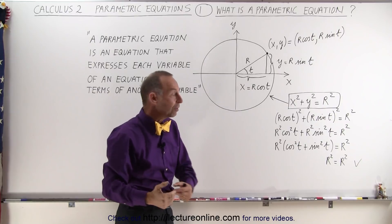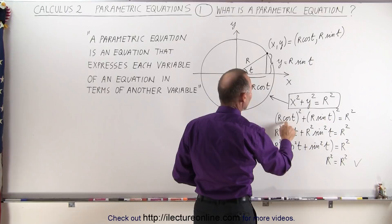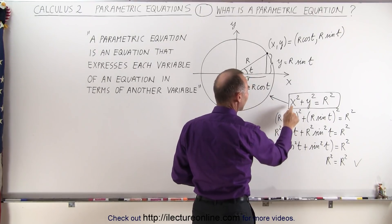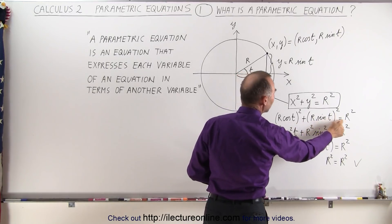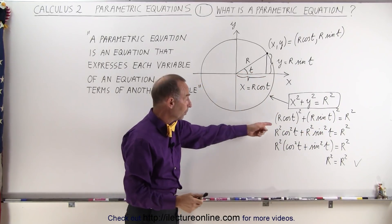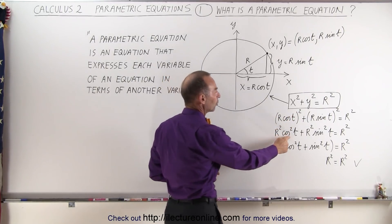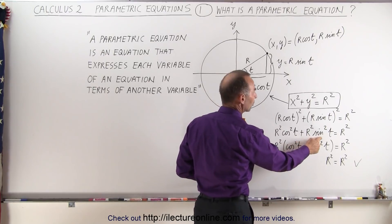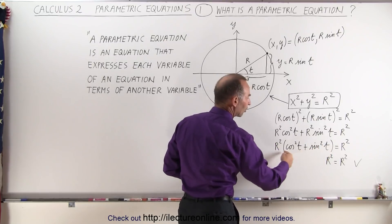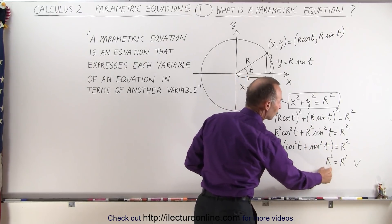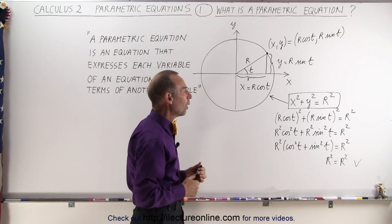To show equivalence, let's replace every x and every y in the equation by their equivalents in terms of t. So we have (r cosine t) squared plus (r sine t) squared equals r squared. Squaring each term gives r squared cosine squared t plus r squared sine squared t equals r squared. Factoring out r squared, we recognize that cosine squared plus sine squared equals 1, and r squared equals r squared — confirming it's a valid substitution.